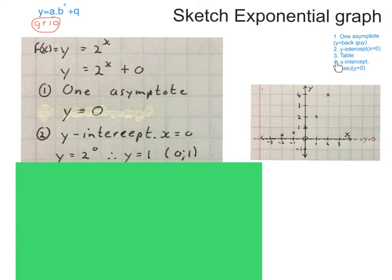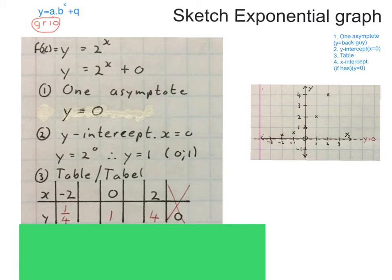The third thing we have to work out is I have to make a table to find one or two more coordinates. Take naught as x, or x is naught, and take one or two numbers right of it and one or two numbers on the left of it. And then find the answers again. Use the calculator.